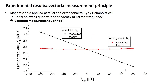I now want to show the most important experimental results. First, the proof of the vectorial measurement principle. We applied a magnetic field using Helmholtz coils both parallel and orthogonal to the bias field. In the case of parallel application we obtain a linear dependency, while in the case of orthogonal application the dependency is strongly suppressed. So this is essentially a single-axis vector magnetometer.